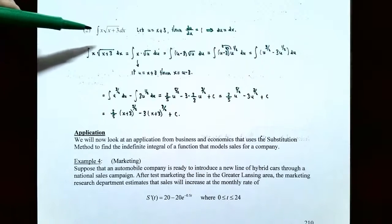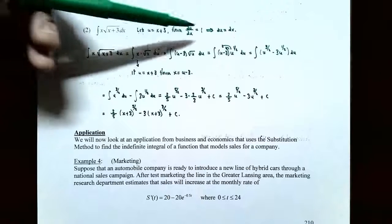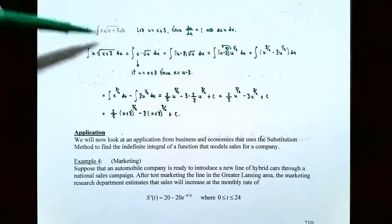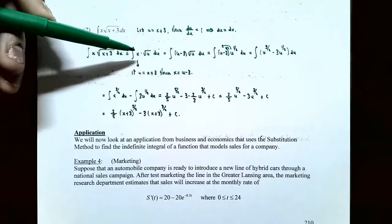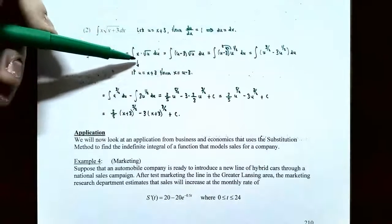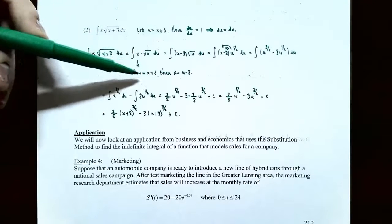Number 2: the integral of x times the square root of (x + 3) dx. The inside function is x + 3, so let u = x + 3. The derivative: du/dx = 1, so du = dx. Replacing: x stays, square root of (x + 3) becomes square root of u, and dx becomes du. Again, there's an x left over that doesn't cancel. Use the substitution again: since u = x + 3, subtract 3 from both sides to get x = u minus 3.